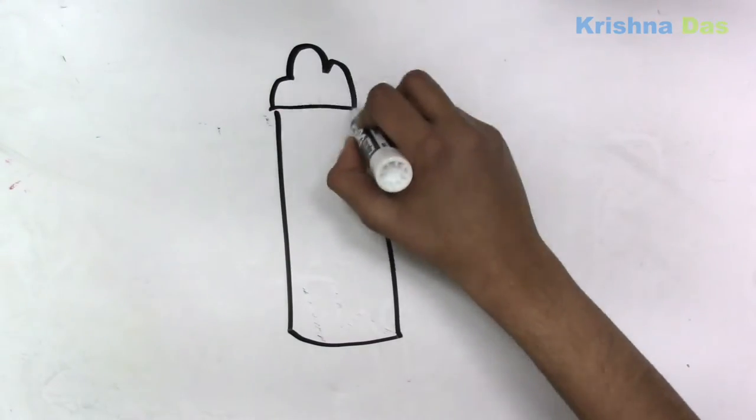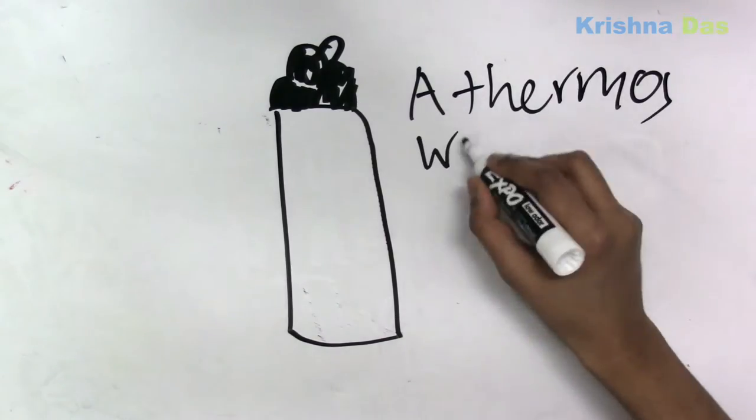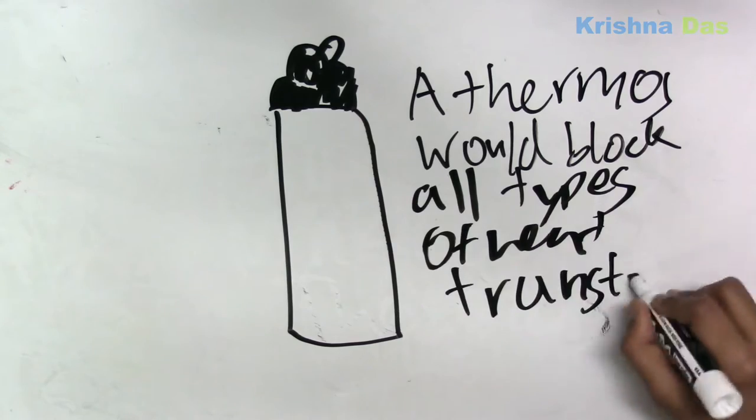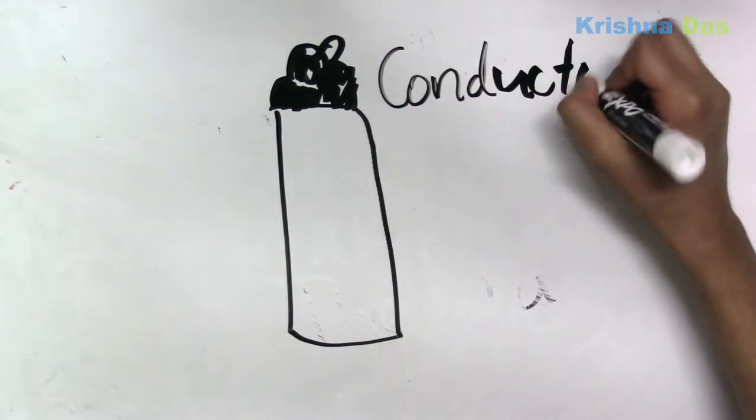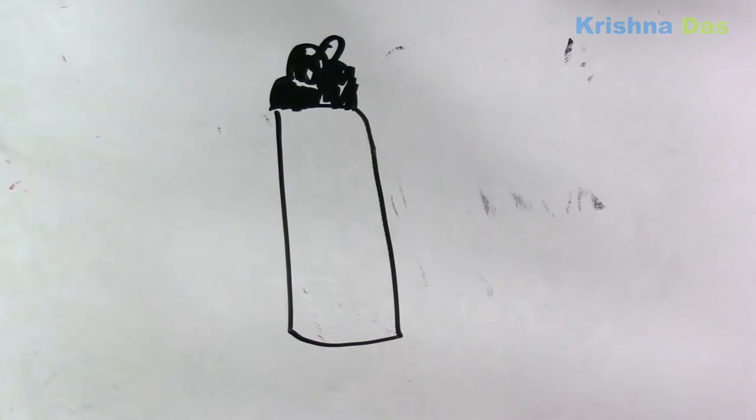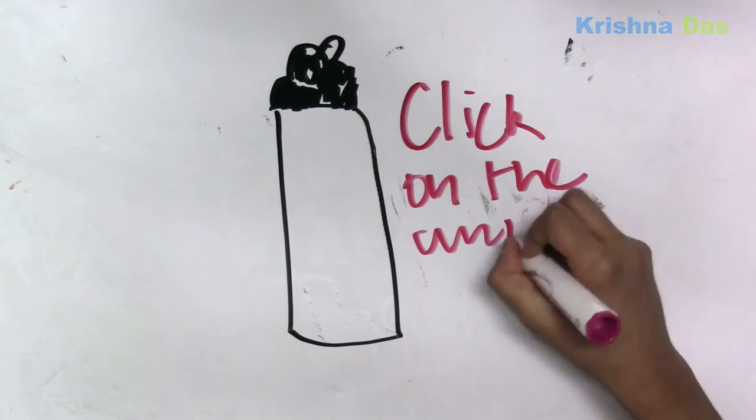It doesn't block heat. A thermos, this is how normal thermos in the world look like. It actually blocks heat if it has a reflective outer cover to reflect the radiation, and it blocks any type of conduction or convection that happens. So it's great for blocking heat. My water bottle would not block heat.